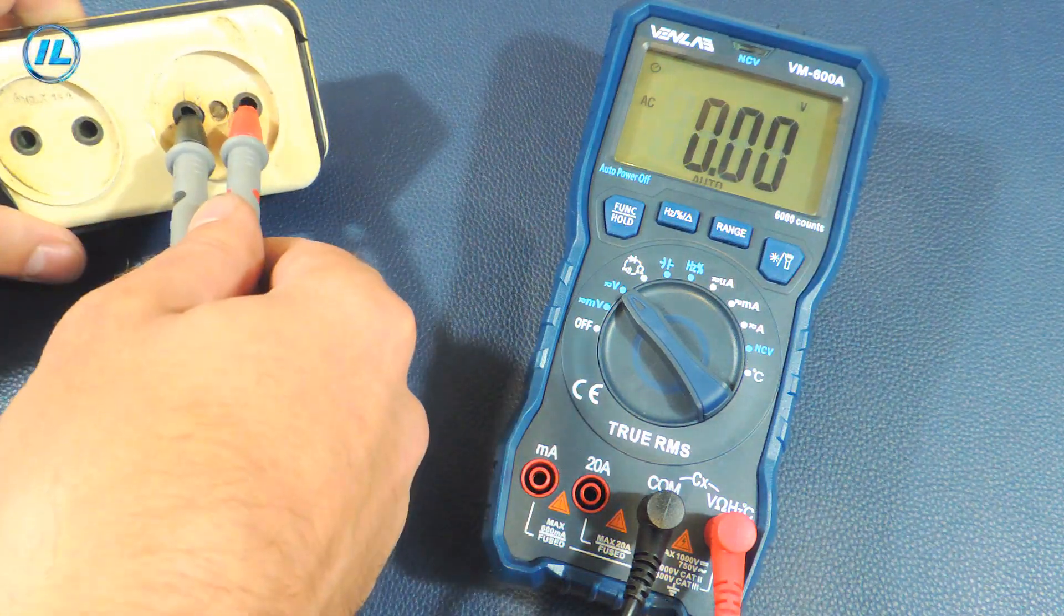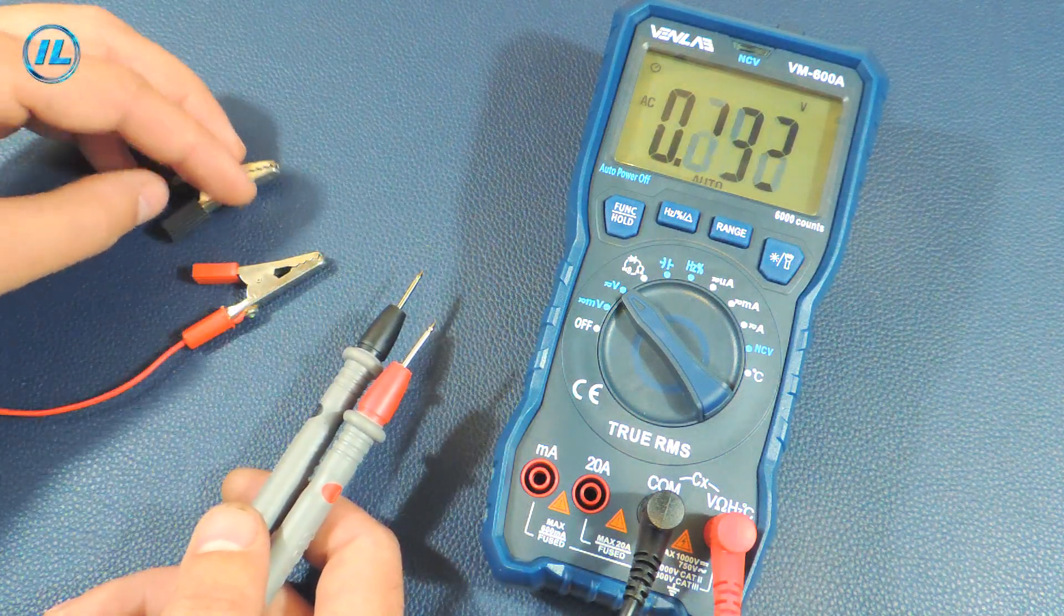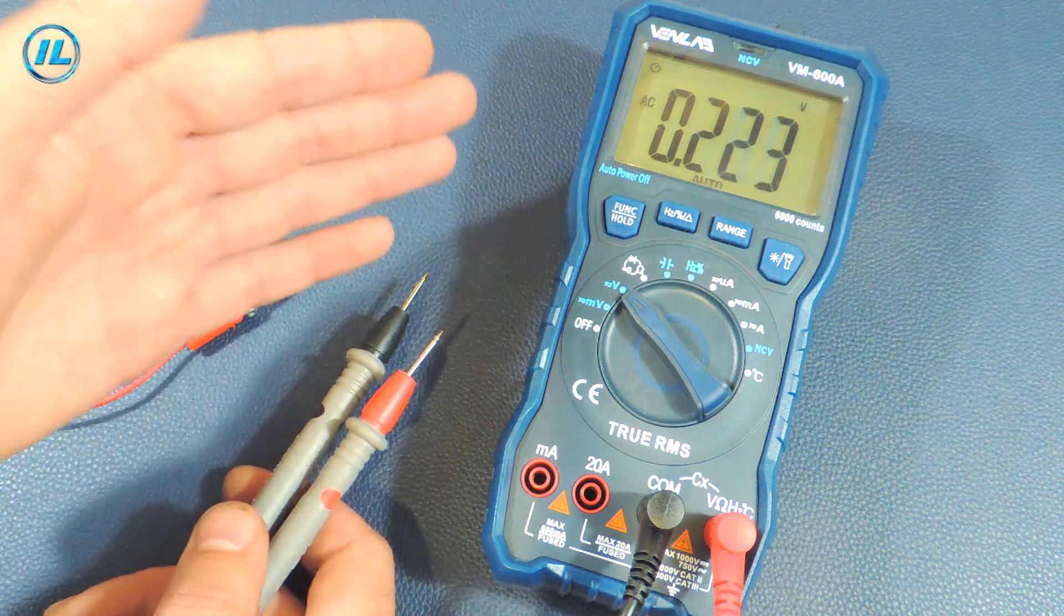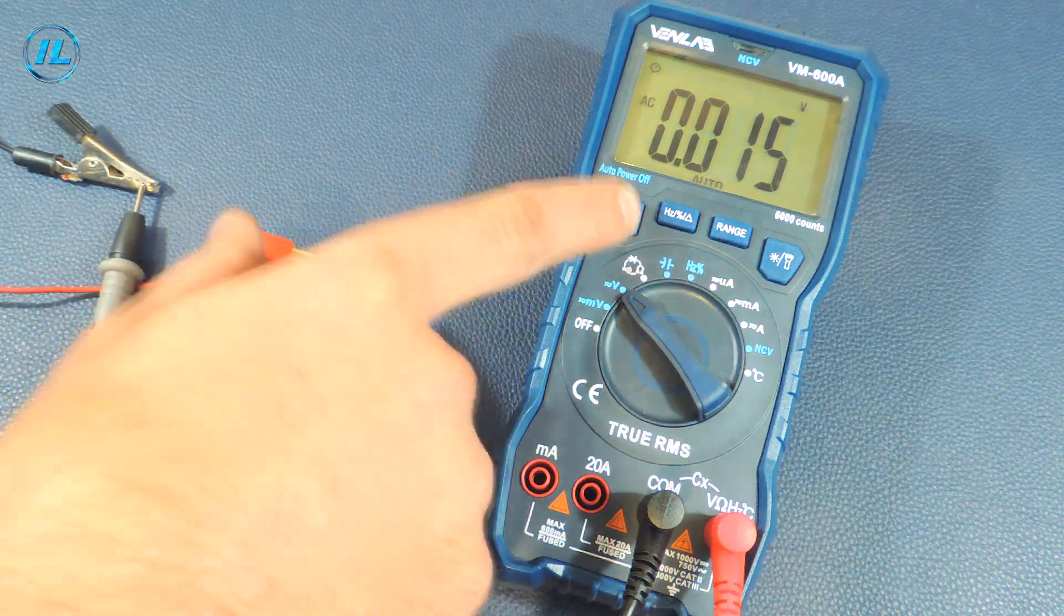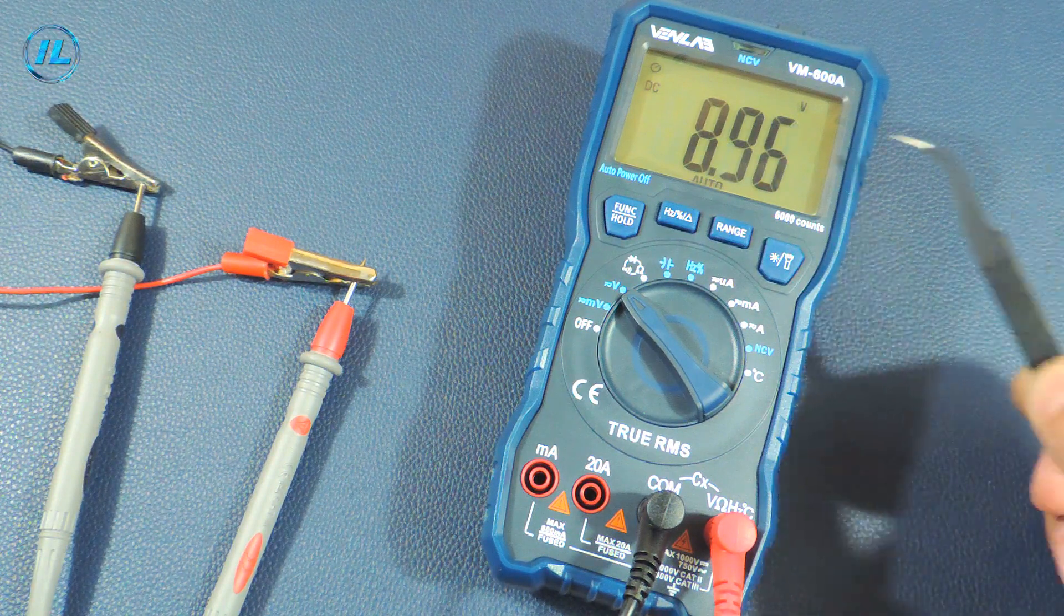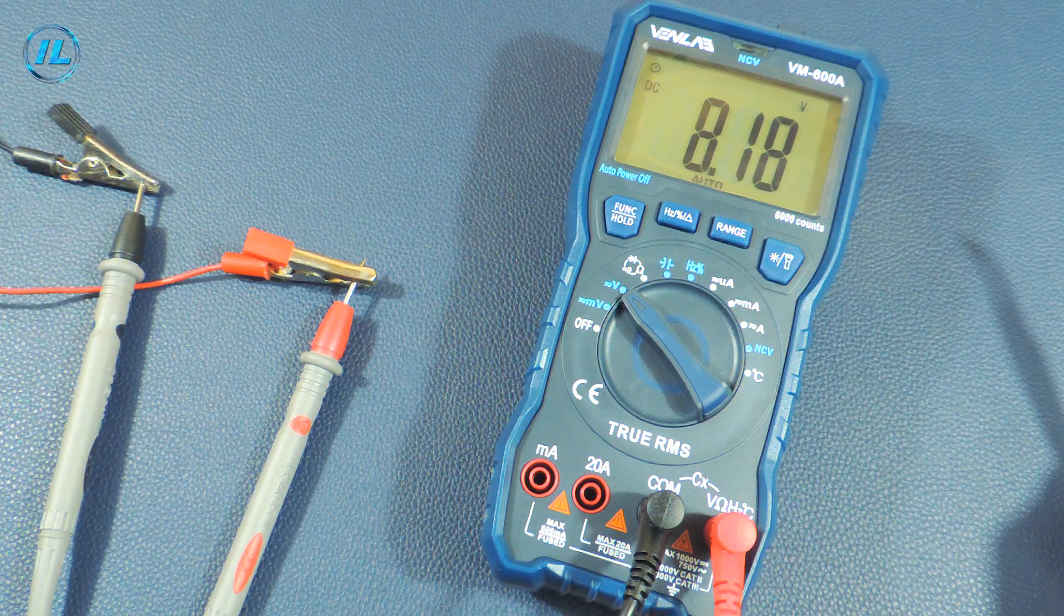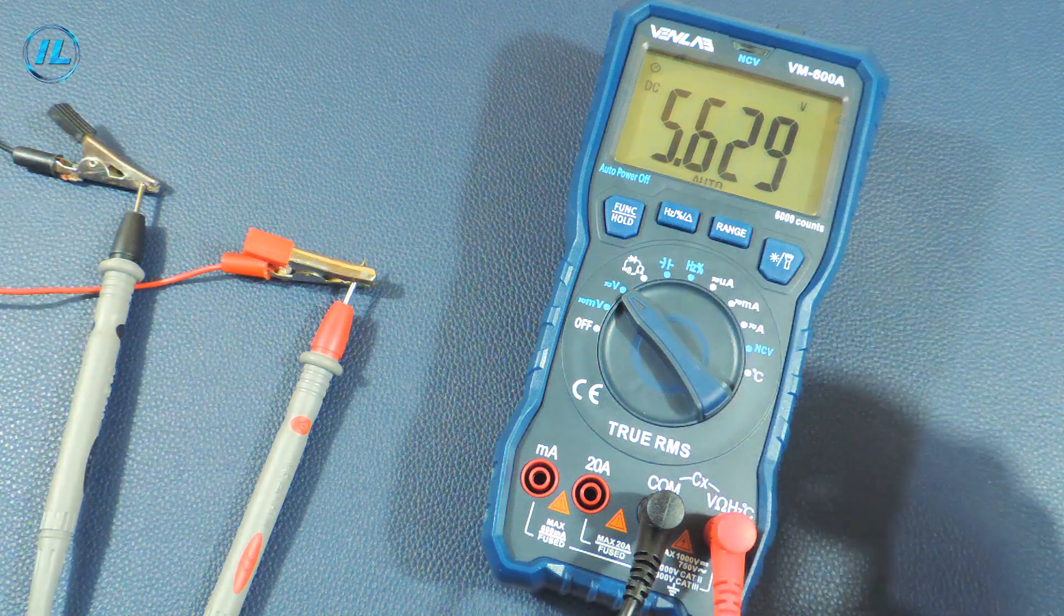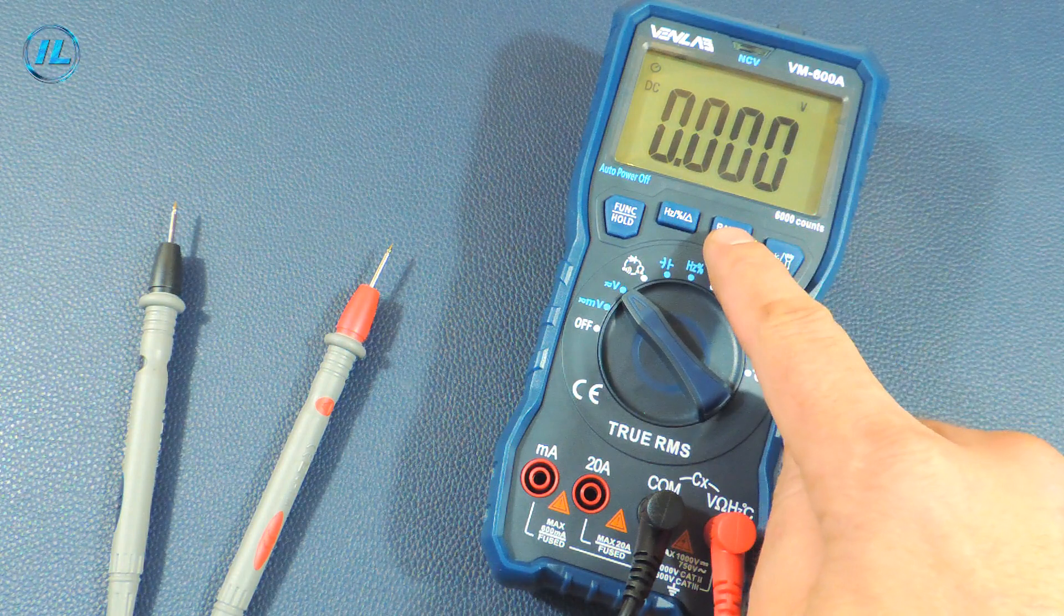The voltage in the electrical network is 244 volts. Now I will supply voltage from the power supply and let's see how the multimeter will change the measurement range when the voltage increases. Units, now dozens. As you can see, the multimeter copes with its task perfectly. You can also switch the measurement range in manual mode using the range button.